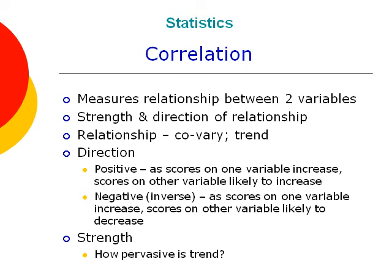To compute a correlation, we collect scores from a group of individuals on two tests. Imagine we're interested in determining if there's a relationship between stress and life satisfaction. We would get a score for individuals on a test of life satisfaction, and a score for the same individuals on a test of stress, so that each individual provides a pair of scores.